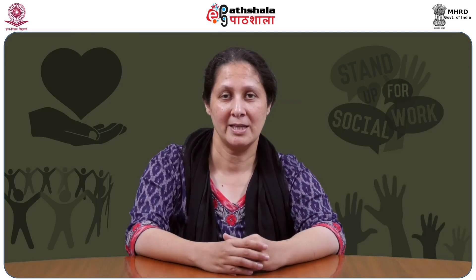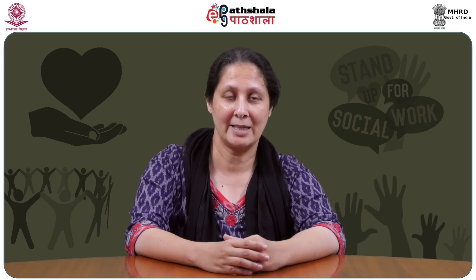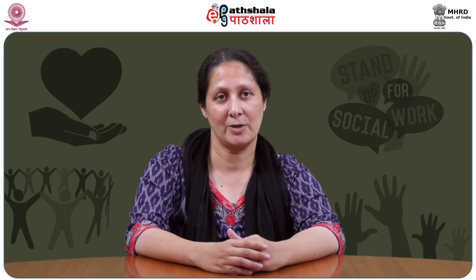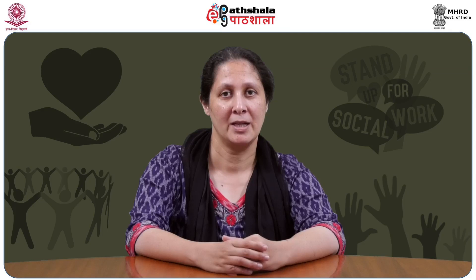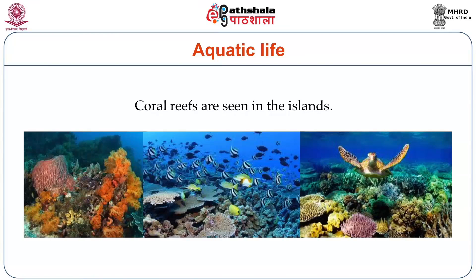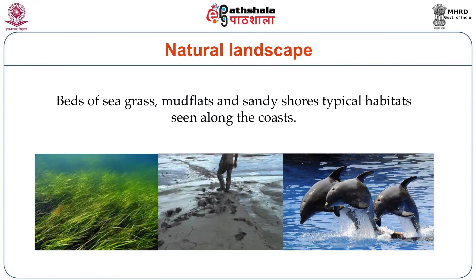Coastal beaches can be seen to change from one place to another. Sometimes they are sandy; in other places, they are rocky. Coastal areas have many types of ecosystems. Mangrove forests are present in the estuarine region — the region where the river waters meet the sea. Coral reefs are seen in island areas. Beds of sea grasses, mudflats, and different types of shores are seen on the coast.